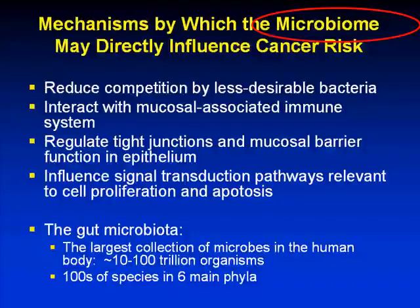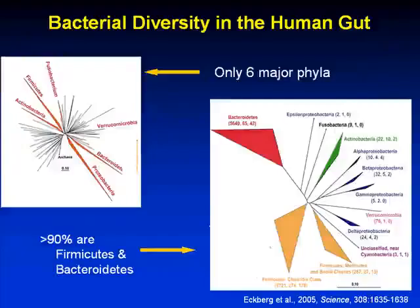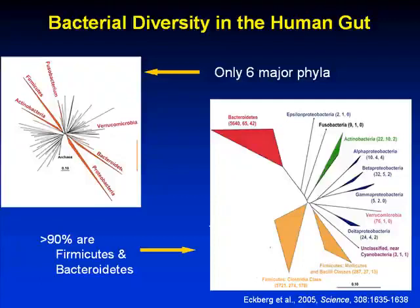With regards to the microbiome and cancer risk, probably the most attention has been given to the gut microbiota. Even though it's this huge number of organisms, it really only accounts for six major phyla, of which about 90% are Firmicutes and Bacteroidetes. On a grand level there is not a lot of diversity, but the diversity is really at the species level, and this is where we see a lot of variation among individuals in different studies.